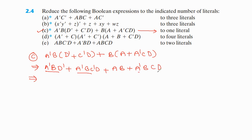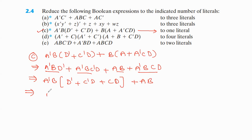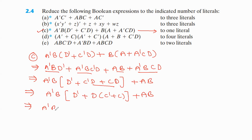In these three product terms take A'B common. This gives A'B(D' + C'D + CD). In the last two terms D is common: A'B(D' + D(C' + C)). Since C' + C = 1, this gives A'B(D' + D) = A'B·1.